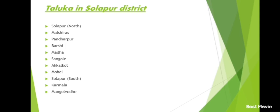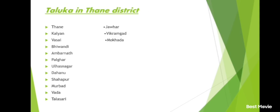Sindhudurg district and its talukas: Kudal, Sawantwadi, Kankavali, Devgad, Malvan, Vengurla, Dodamarg, Vaibhavwadi.